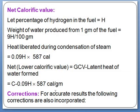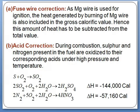For accurate results, the following corrections have to be incorporated. First, the fuse wire correction: since a magnesium wire is used for ignition, the heat generated by burning of the magnesium wire is also included in the GCV. Therefore, this amount of heat has to be subtracted from the observed value.